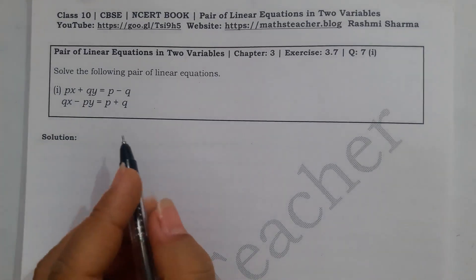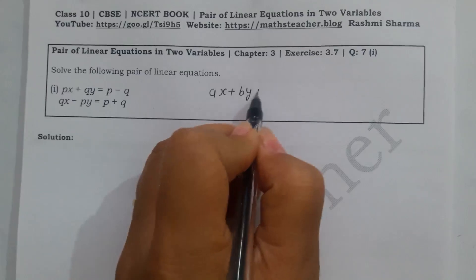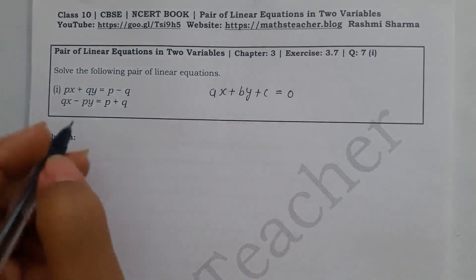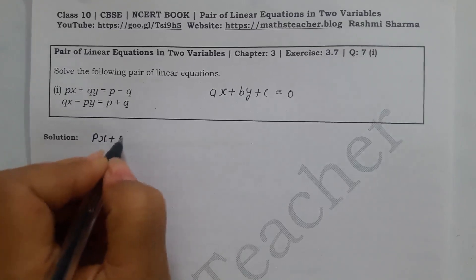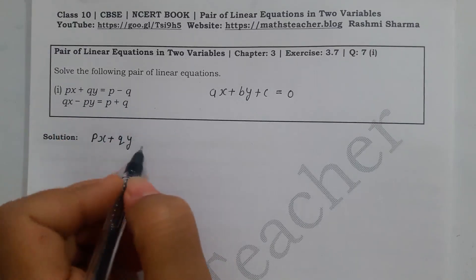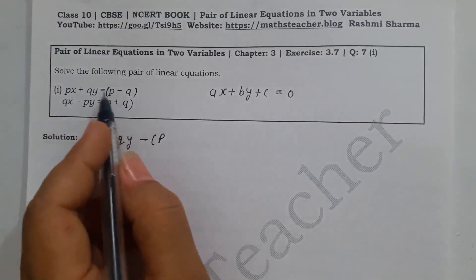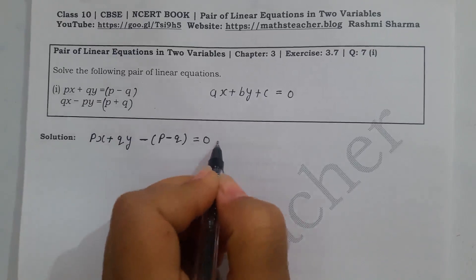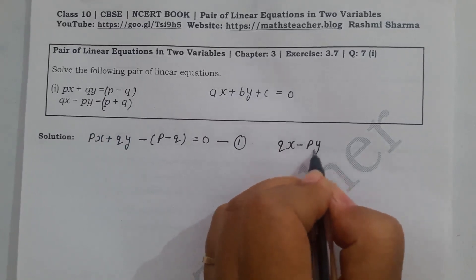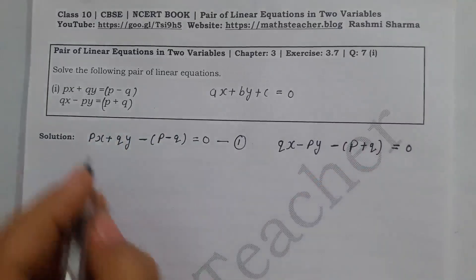The first condition of cross multiplication is that the equation must be in the form ax plus by plus c equal to 0, meaning all terms should be on the left side. So I will rearrange: the first equation px plus qy minus (p minus q) equal to 0, making c1 equal to minus(p minus q), which is negative here. Similarly, the second equation becomes qx minus py minus (p plus q) equal to 0.